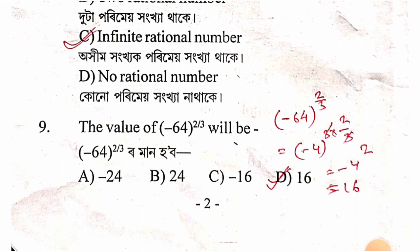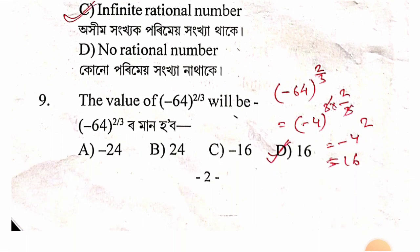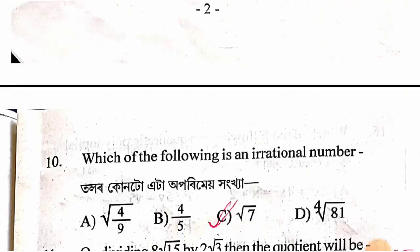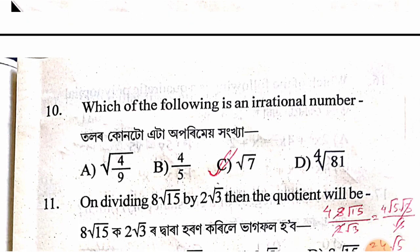The value of (−64)^(2/3): the cube root of −64 is −4, and (−4)² = 16. So the answer is 16, option D.